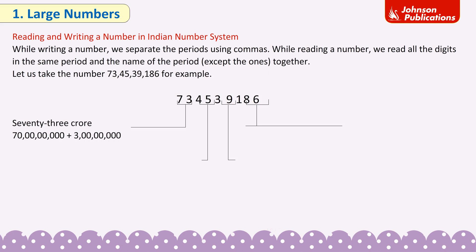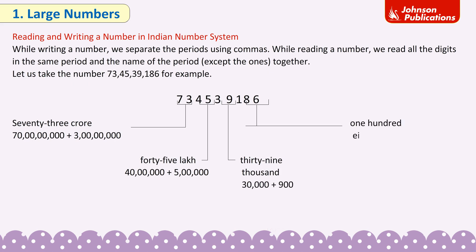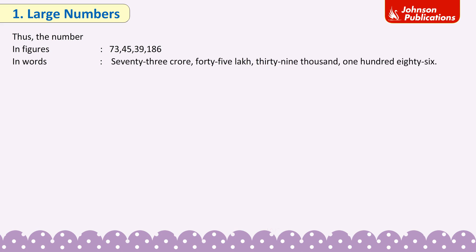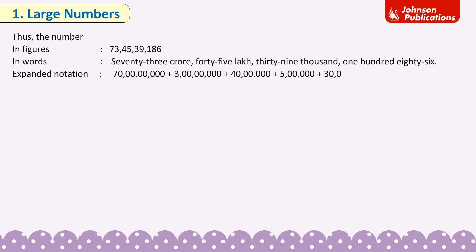70 crore + 3 crore, 40 lakh + 5 lakh, 30,000 + 9,000, 100 + 80 + 6. Thus, the number in figures is 73,45,39,186. In words: 73 crore 45 lakh 39,186. Expanded notation: 70 crore + 3 crore + 40 lakh + 5 lakh + 30,000 + 9,000 + 100 + 80 + 6.